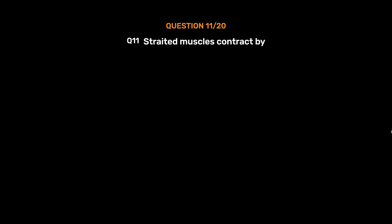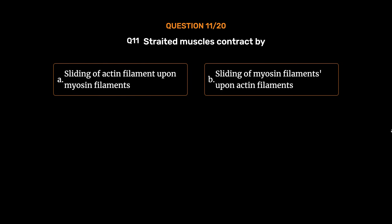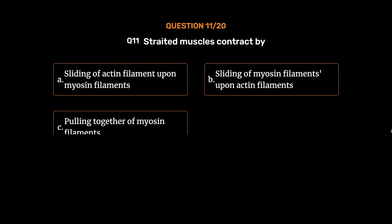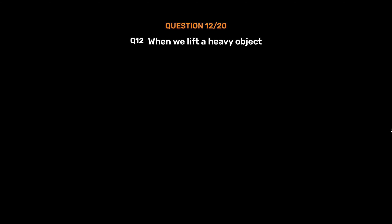Question No. 11. Striated muscles contract by: Option A. Sliding of actin filament upon myosin filaments, Option B. Sliding of myosin filaments upon actin filaments, Option C. Pulling together of myosin filaments, Option D. Pulling together of actin filaments. The correct answer is Option A, sliding of actin filament upon myosin filaments.